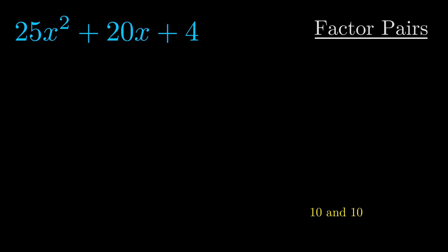Now once we have this factor pair, what we want to do is use it to split up the b value.